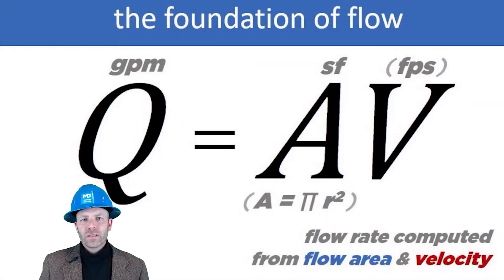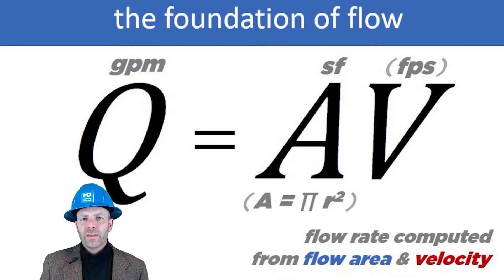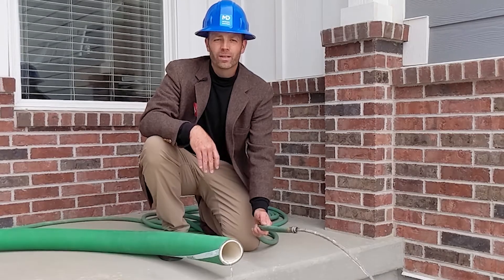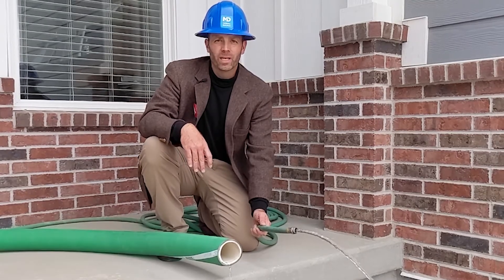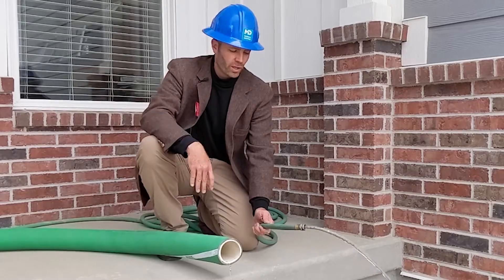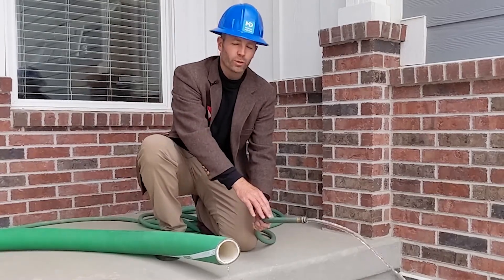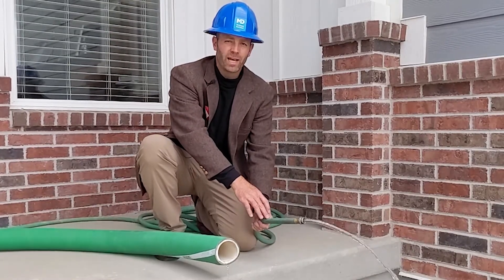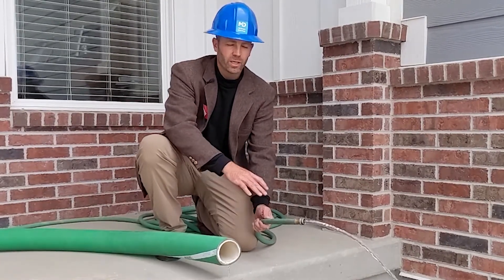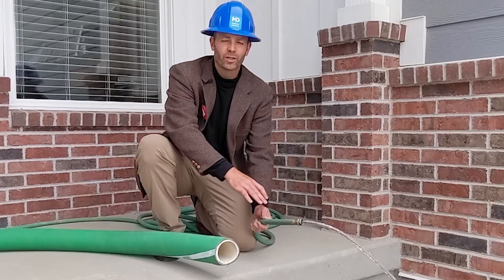It's all based on the foundational flow equation. The flow rate, or gallons per minute, is directly proportional to the flow area available and the velocity — the feet per second that is created, or that you want. If I wanted the same flow rate, or gallons per minute, to go through both of these hoses, the water in this hose would have to be so much faster, or have more velocity, because there's so much less area to move through.